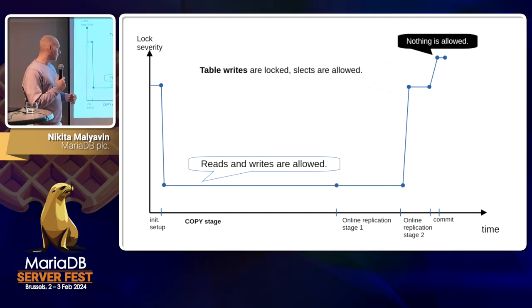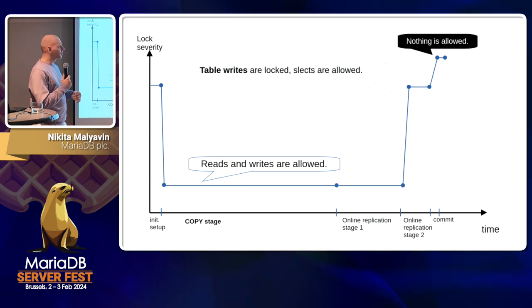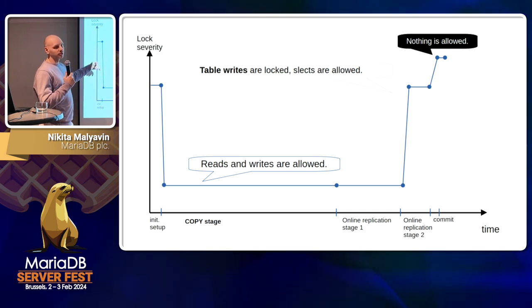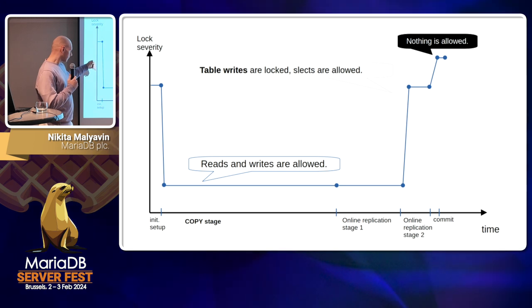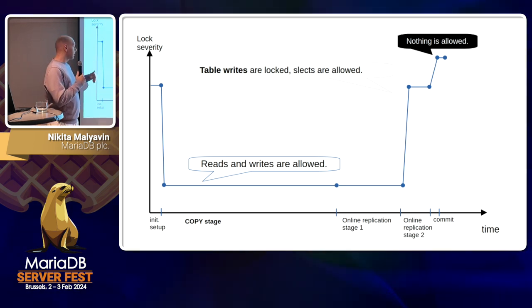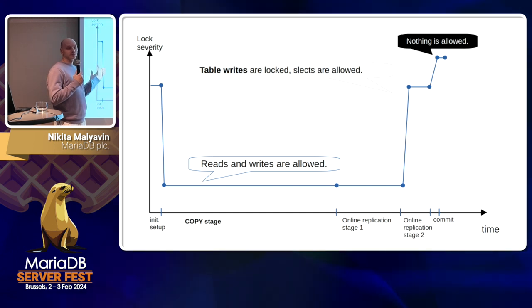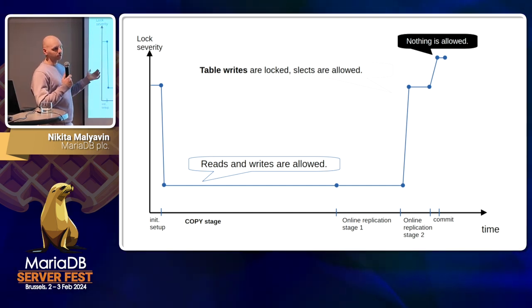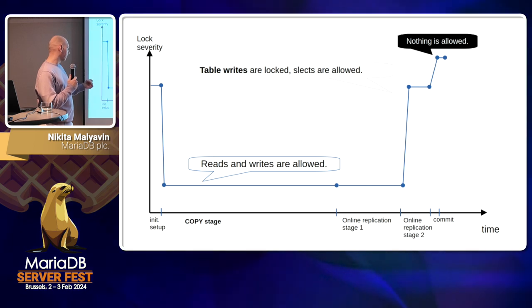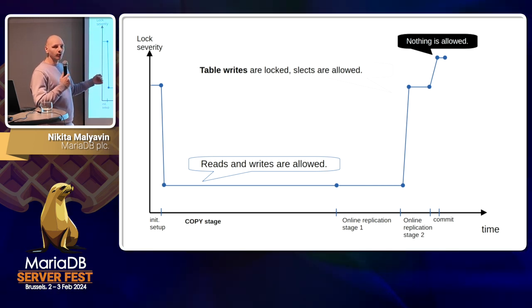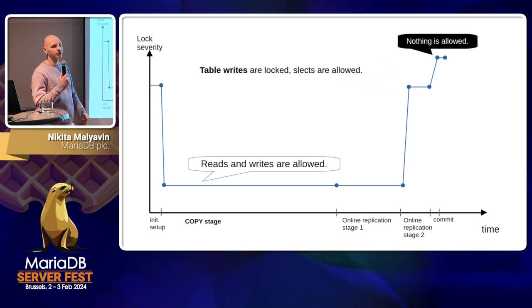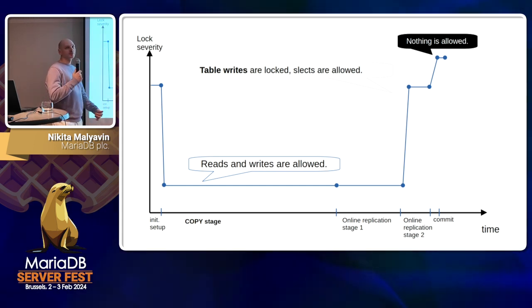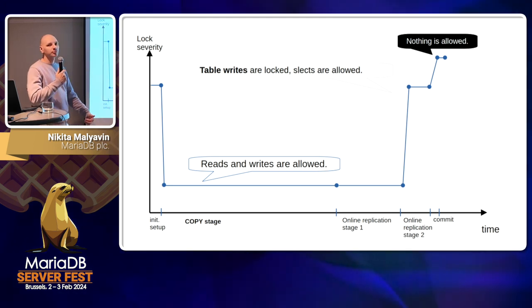All the DMLs that began before the ALTER TABLE also have to finish before this ALTER TABLE begins. Why? First we have to make some setup — we set up an internal trigger. From that point of time, all the transactions can use this trigger; internally they just know that this table is going to be altered. And so this makes it possible to be unblocked.